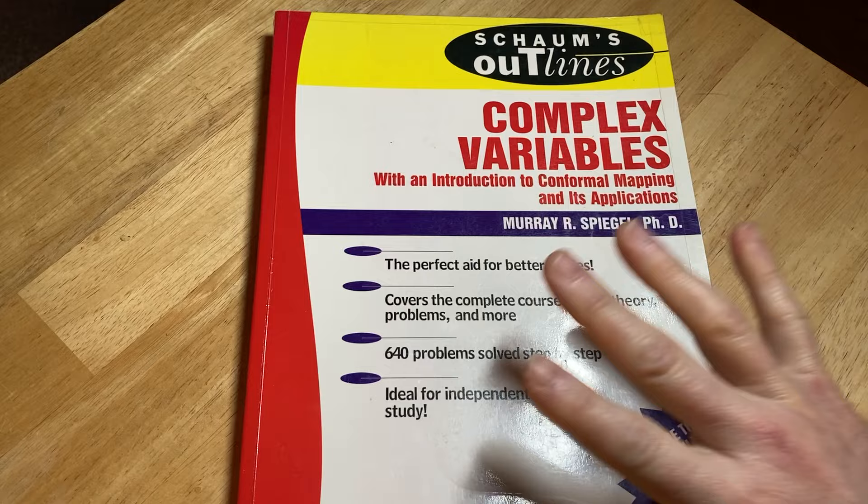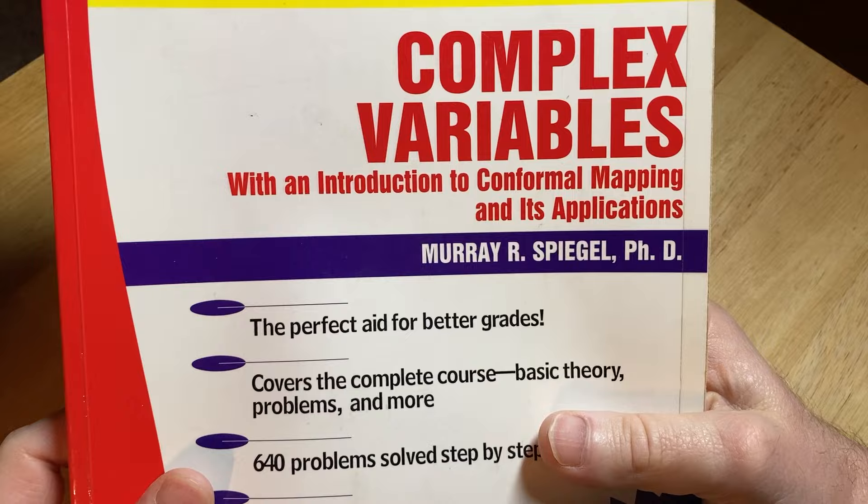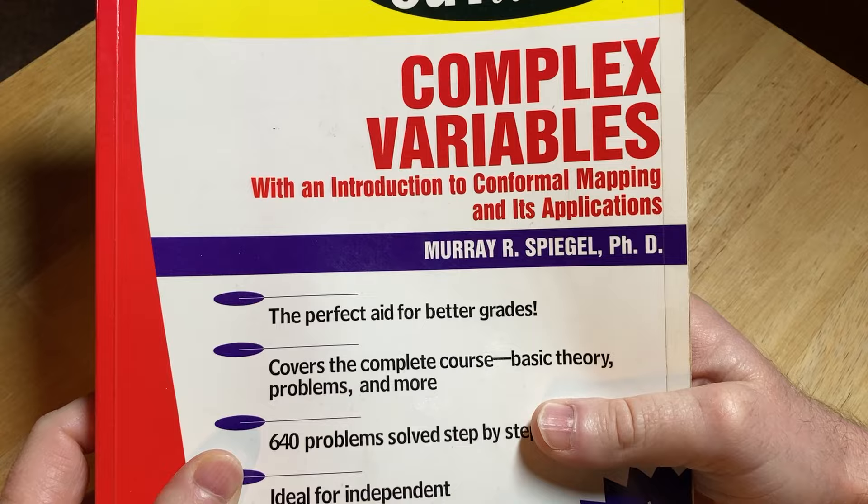It's called Schaum's Outline of Complex Variables with an introduction to conformal mapping and its applications. I think there are a lot of people I've known who have felt this is an excellent book, and I agree with all of you.